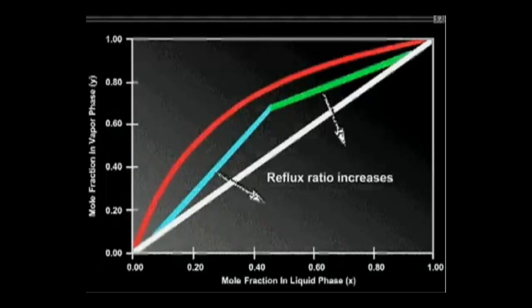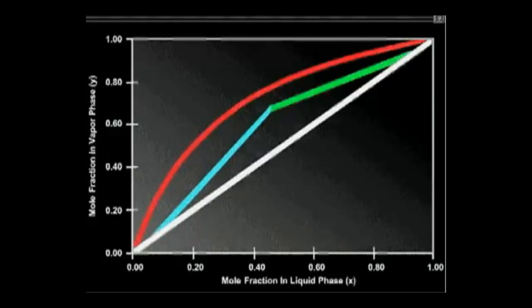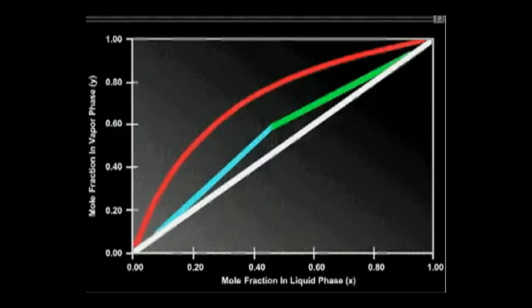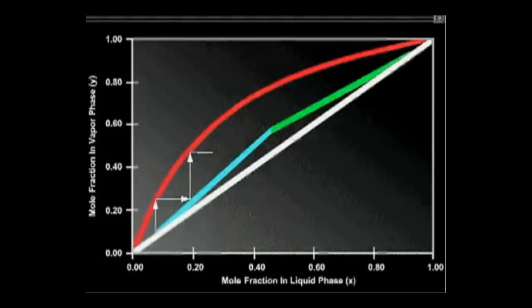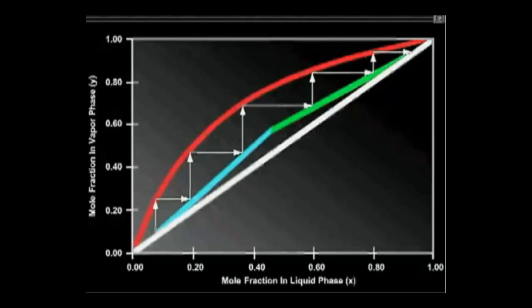In the McCabe-Thiele plot, the two operating lines move away from the equilibrium line toward the 45-degree line. The individual equilibrium stage steps become larger, and consequently fewer equilibrium stages are required for a given separation.